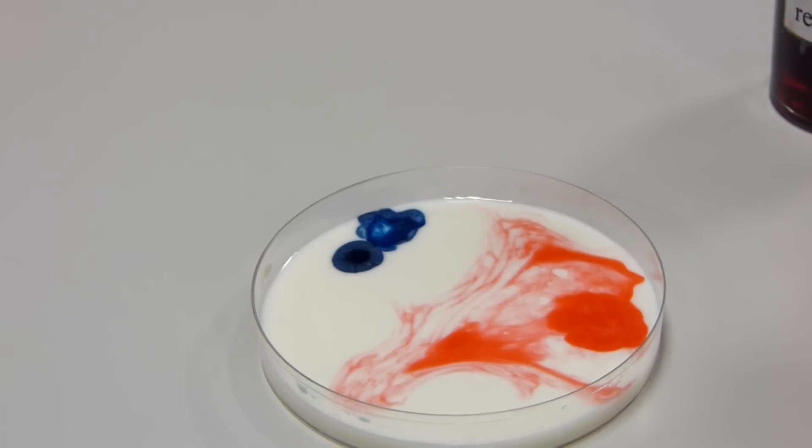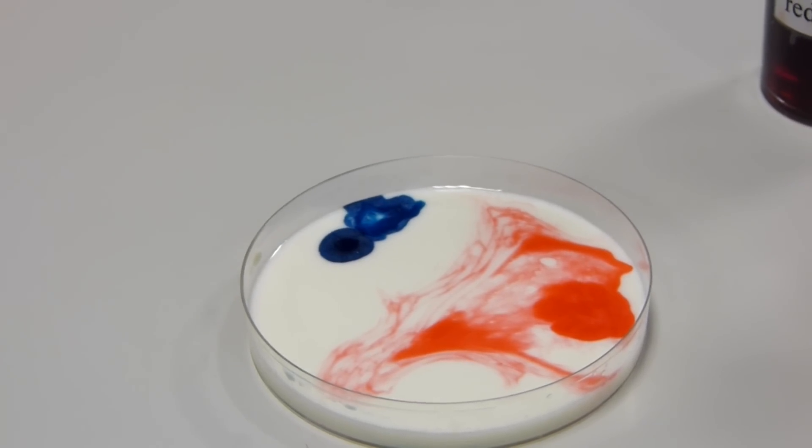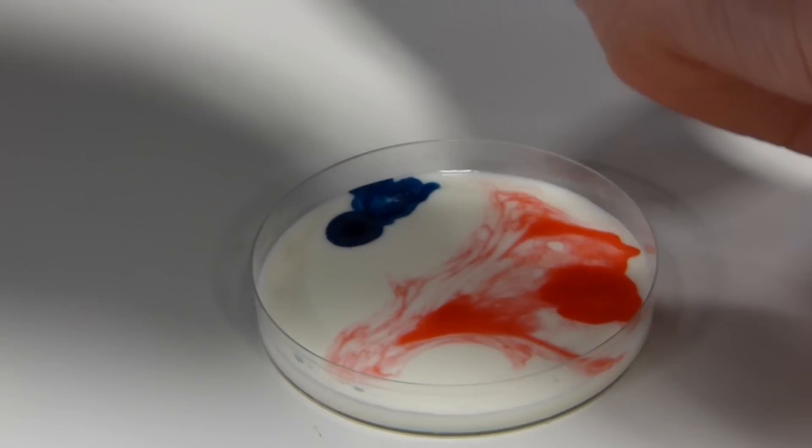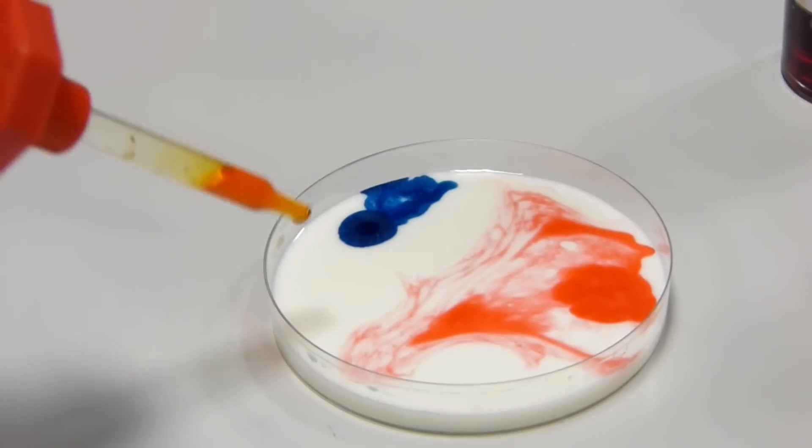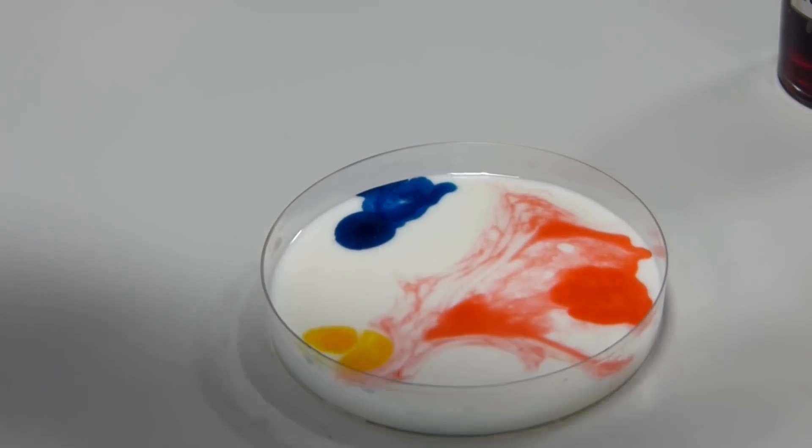And finally we're going to add two drops of yellow food colouring, yet again separate from the other two colours. Looks orange to me.